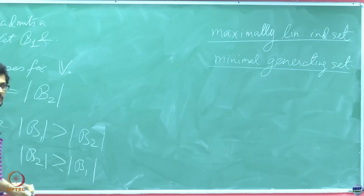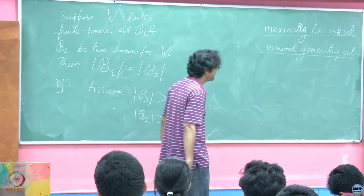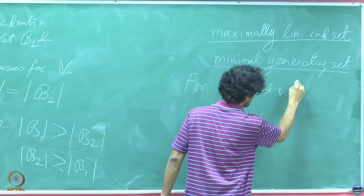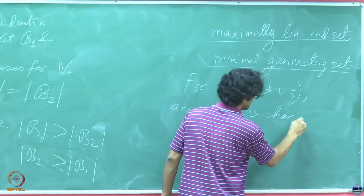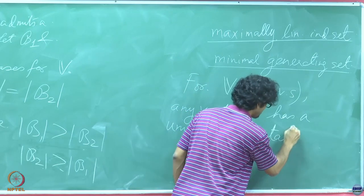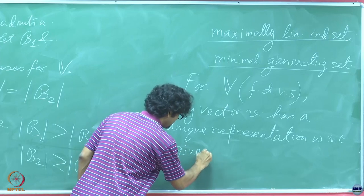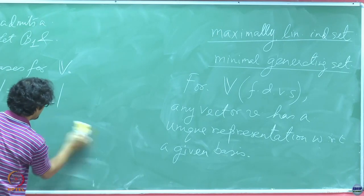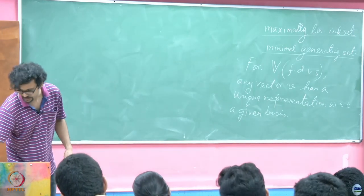This leads us to another very interesting conclusion. Hereafter we shall mostly be dealing with finite dimensional vector spaces, and I will use the shorthand FDVS for finite dimensional vector spaces. For V which is a finite dimensional vector space, any vector V has a unique representation with respect to a given basis. Of course, if you change the basis then the representation changes. A pictorial illustration of this point would be our favorite example — R2.